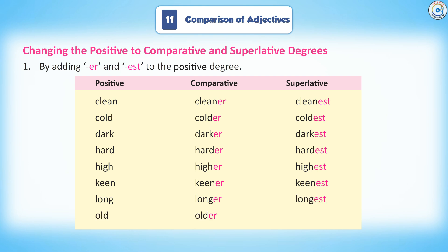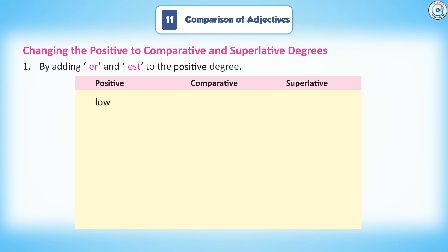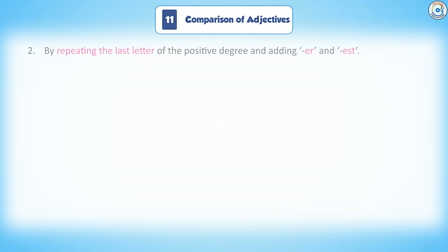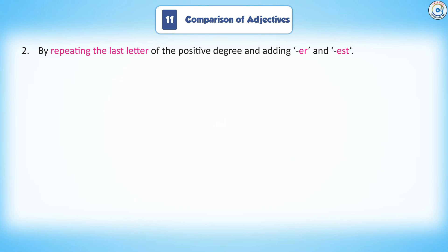Continuing Rule 1: Old, older, oldest. Low, lower, lowest. Short, shorter, shortest.